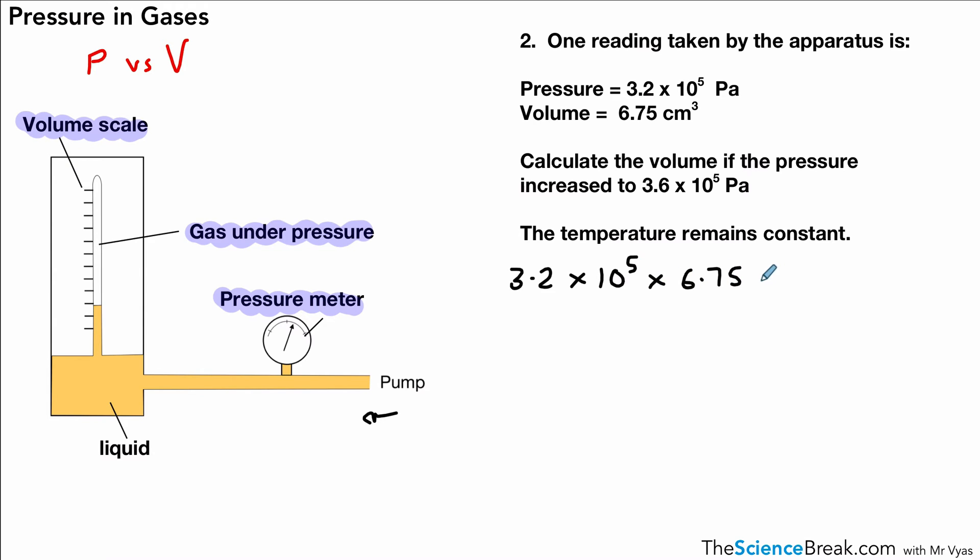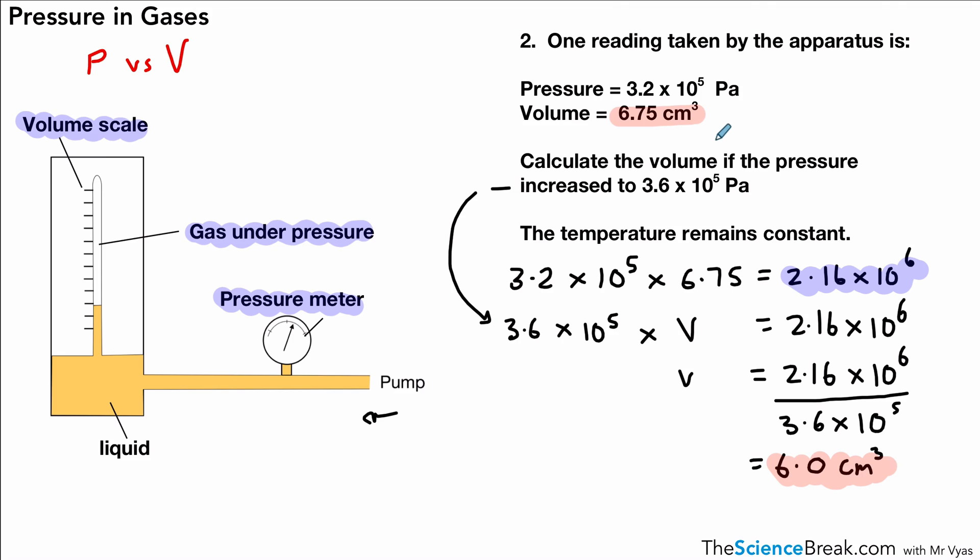This is slightly trickier using standard form. 3.2 × 10⁵ times 6.75 gives us 2.16 × 10⁶ as our constant. We've increased the pressure to 3.6 × 10⁵. Rearranging the equation and calculating gives us 6 centimeters cubed. Hopefully you got that. That's it for today. Thank you for watching.